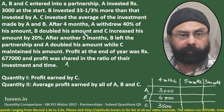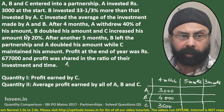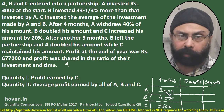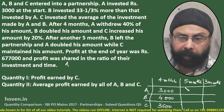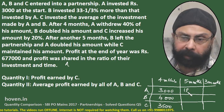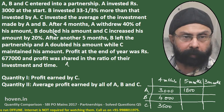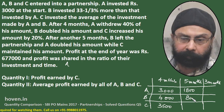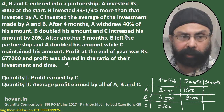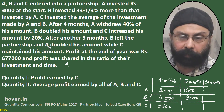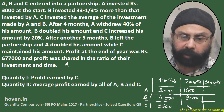Now let us see what happened after 4 months. A withdrew 40 percent of his amount. 40 percent of 3000 is 1200, so for the next 5 months his investment was 3000 minus 1200, which is 1800. B doubled his amount, so B changed it to 8000. And C increased his amount by 20 percent. One fifth of 3500 is 700, so an increase of 700 means C's investment becomes 4200.